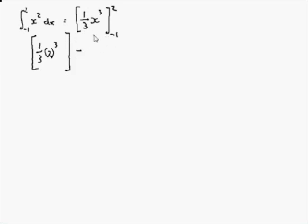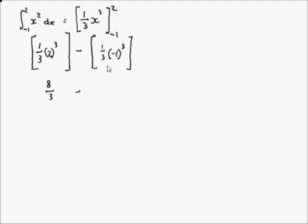Minus, substituting minus 1 into the equation: minus 1 cubed is minus 1, times a third gives minus a third. So we have 8 over 3 minus minus a third, which gives 8 over 3 plus a third, equalling 3.